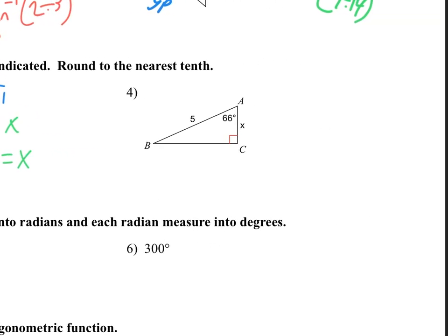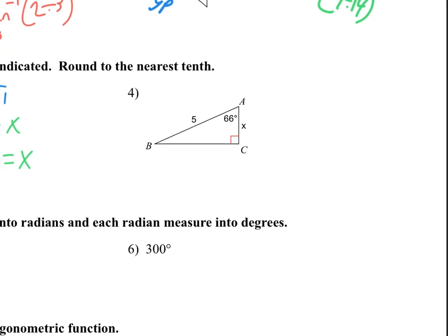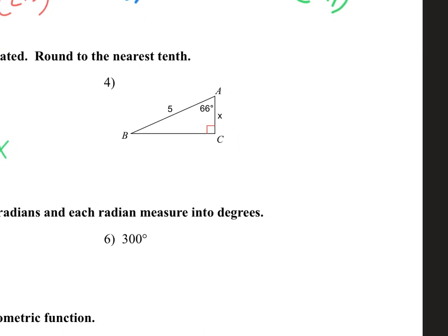Moving along to number 4 — similar type of problem, we want to find a side length. The 5 is definitely the hypotenuse. In this case the angle we're using is that one, so x is the adjacent side. Down here would be the opposite — we don't need that in this problem. We're just using adjacent and hypotenuse.